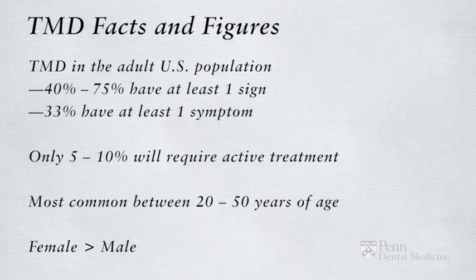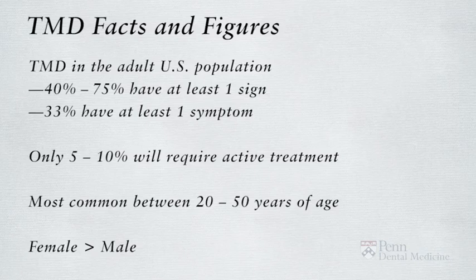In the United States, 40 to 75 percent of adults demonstrate one sign of TMD. For example, many people complain of jaw clicking that does not cause pain or dysfunction and has little to no impact on their quality of life. This would be considered a sign of a TMD. Up to 33 percent of the adult population in the U.S. will experience at least one symptom of TMD, most commonly reported as pain in the TMJ area or jaw muscles, which may cause referred pain to other structures of the head and neck.